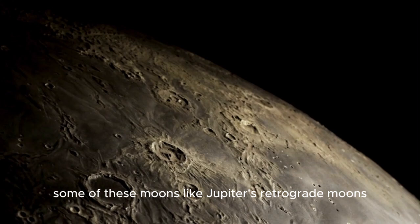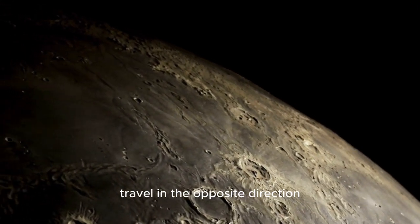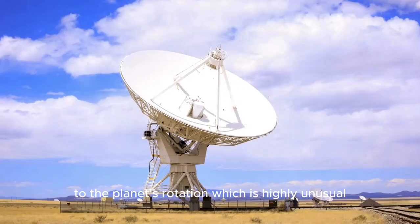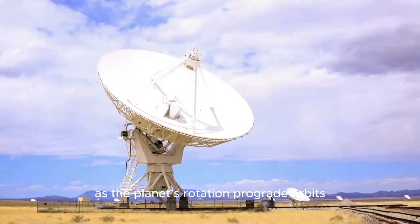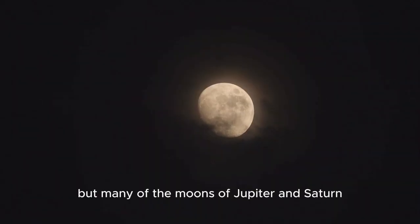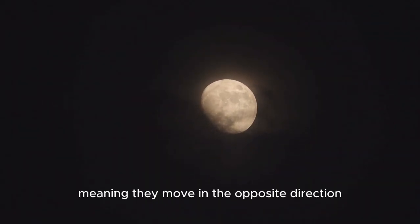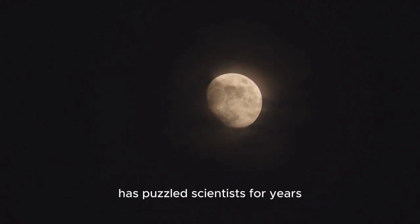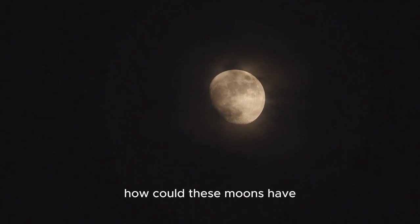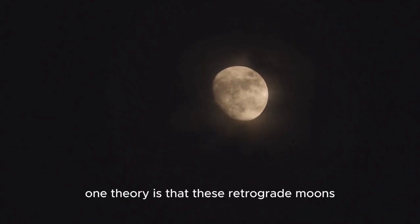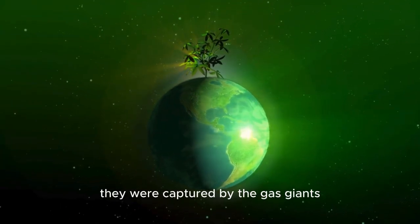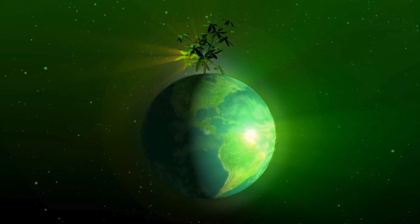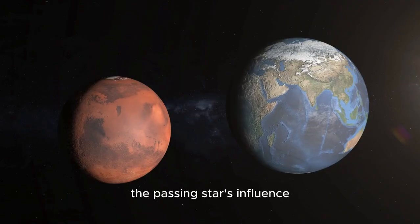Some of these moons, like Jupiter's retrograde moons, travel in the opposite direction to the planet's rotation, which is highly unusual. Typically, moons orbit their planets in the same direction as the planet's rotation, prograde orbits, but many of the moons of Jupiter and Saturn follow retrograde orbits, meaning they move in the opposite direction. The discovery of these retrograde moons has puzzled scientists for years. How could these moons have ended up in such strange orbits? One theory is that these retrograde moons were not originally part of the planets; they were captured by the gas giants from the outer solar system. This could be a direct consequence of the passing star's influence.